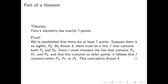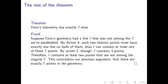We take a similar approach to prove Fano's geometry has exactly seven lines. Our construction showed at least seven lines are necessary. Suppose there's an eighth line L not among the seven established. By axiom 4, each two distinct points have exactly one line on both of them, so L can contain at most one of the seven points. Since L must contain three points by axiom 2, it must have at least two points not among the original seven — meaning our geometry has at least nine points. But we just proved there are exactly seven, so this is a contradiction. Therefore, Fano's geometry has exactly seven lines.